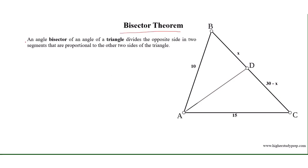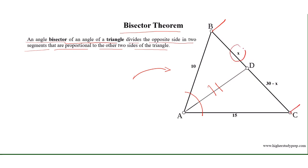Angle Bisector Theorem: an angle bisector of an angle of a triangle divides the opposite side into two segments that are proportional to the other two sides of the triangle. For example, in triangle ABC, AD is the angle bisector of angle A, and the opposite side BC is divided into two segments x and 30 minus x that are proportional to the other two sides.